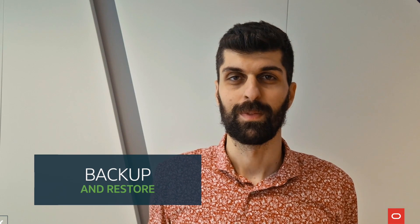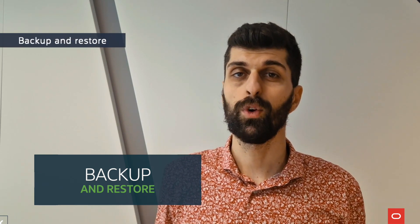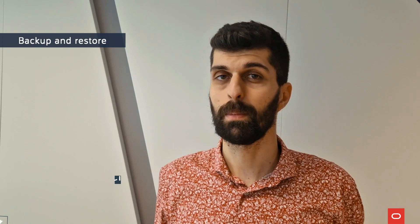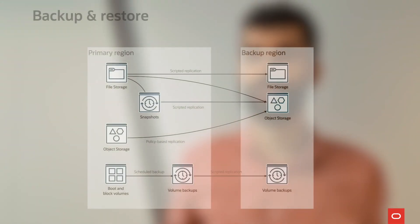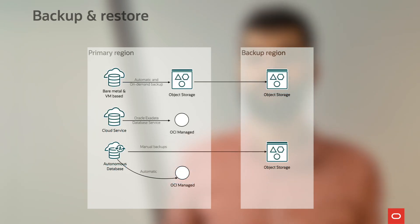Backup and restore is the most basic method to make your files redundant. You can create a full backup of your files or an incremental one, manually or automatically, and you can create it in the same place or from one site to another — the most used scenario being from one region to another or from on-prem to cloud. In this picture, you have examples of how different types of storage and databases can use that option. A wide range of services use object storage as a way to replicate their files in another region.